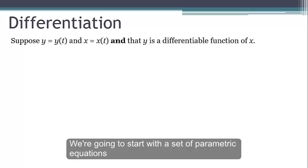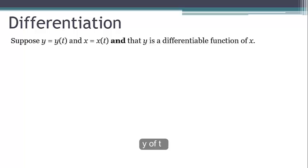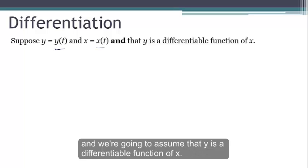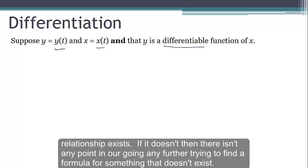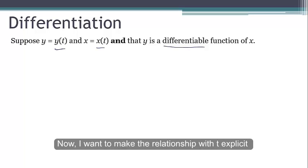So we're going to start off with a set of parametric equations, y of t and x of t, and we're going to assume that y is a differentiable function of x. Now, I'm not saying that we can necessarily find this function f, just that the differentiability relationship exists. If it doesn't, then there isn't any point in going any further trying to find a formula for something that doesn't even exist.